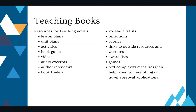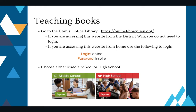The text complexity measures can help you when you're filling out novel approval applications. To go there, you'll go to Utah's Online Library. If you're accessing this from the district Wi-Fi you don't need to log in. However, if you're accessing it from home, log in with the username 'online' and the password 'inspire,' then choose middle school or high school.